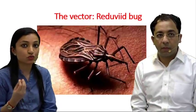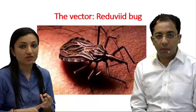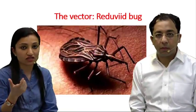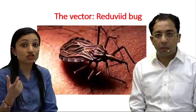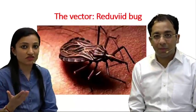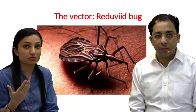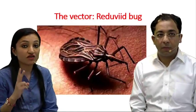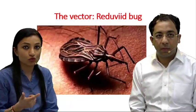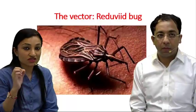Chagas disease is caused by Trypanosoma cruzi, one of the important hemoflagellates among protozoal parasites. The other important one is Leishmania. You can remember this using the mnemonic HALT: H for hemoflagellates, A for nothing, L for Leishmania, T for Trypanosoma. There are two important species: Trypanosoma brucei and Trypanosoma cruzi, and our discussion focuses on Trypanosoma cruzi.